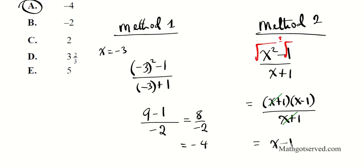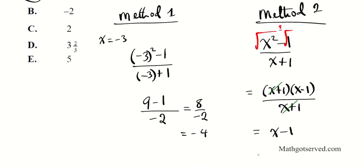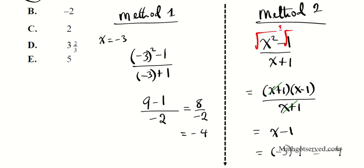Now plug in negative 3: negative 3 minus 1 is simply negative 4. So there goes method 2. You can see both methods working out and giving the same answer.